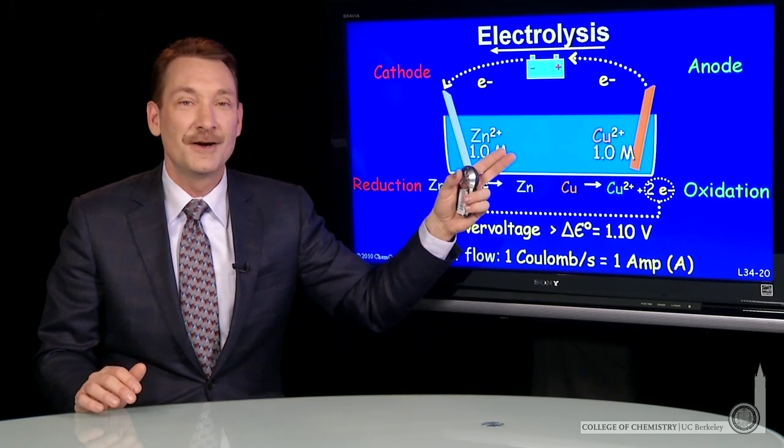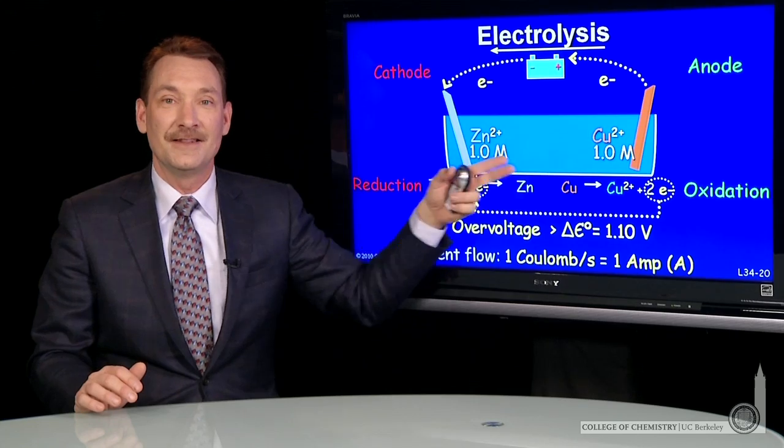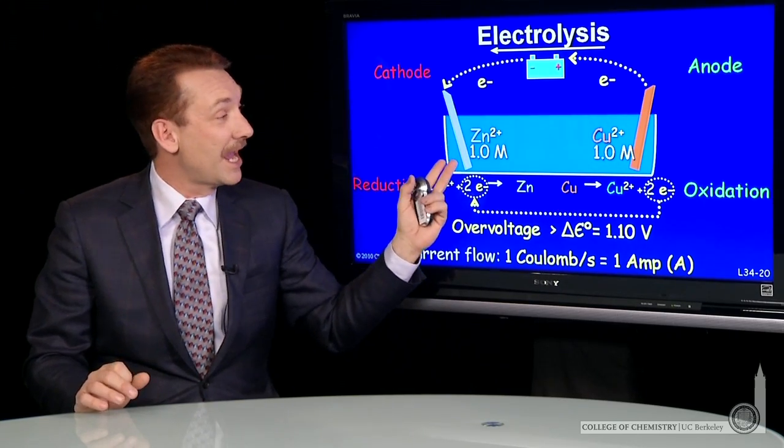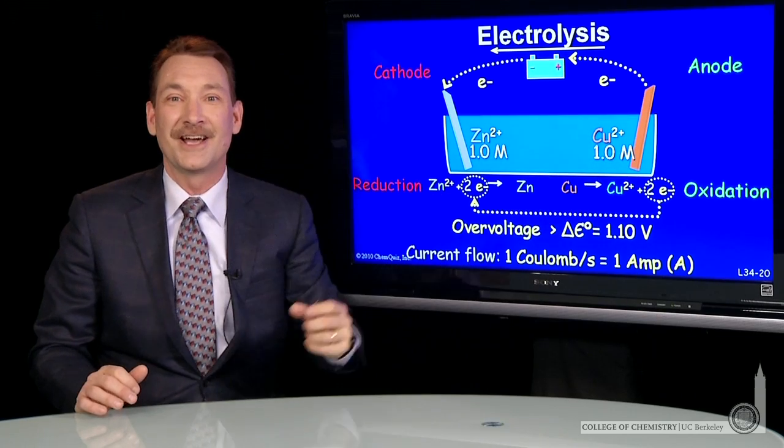There's a choice whether to plate zinc in the electrolytic direction with an external voltage, or remove that voltage and plate copper in the galvanic direction.